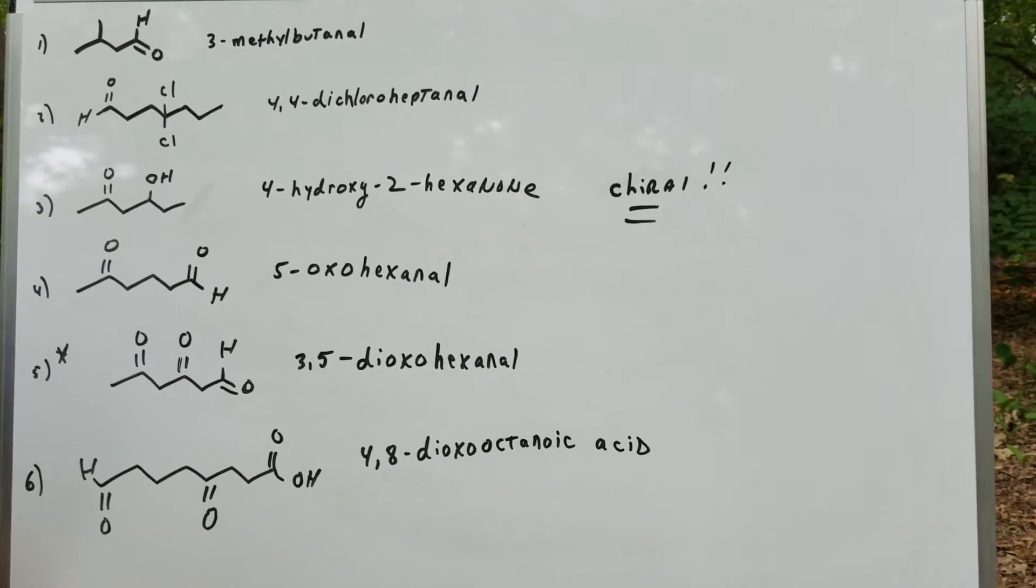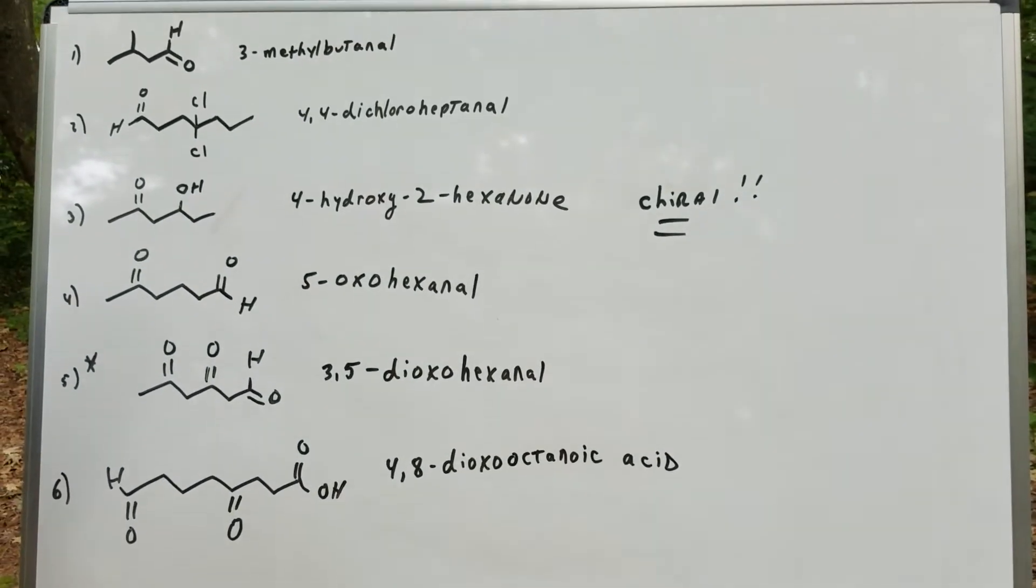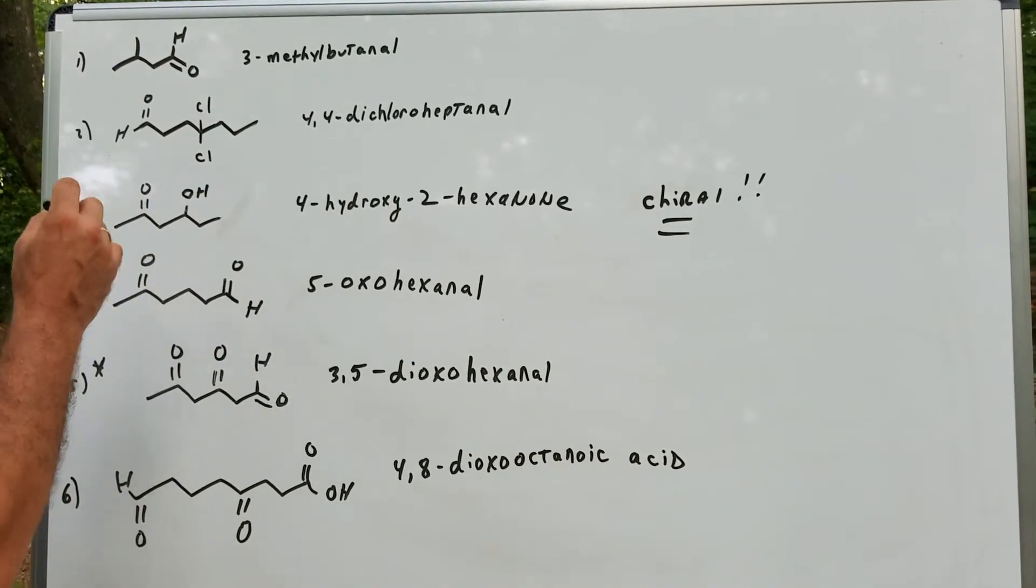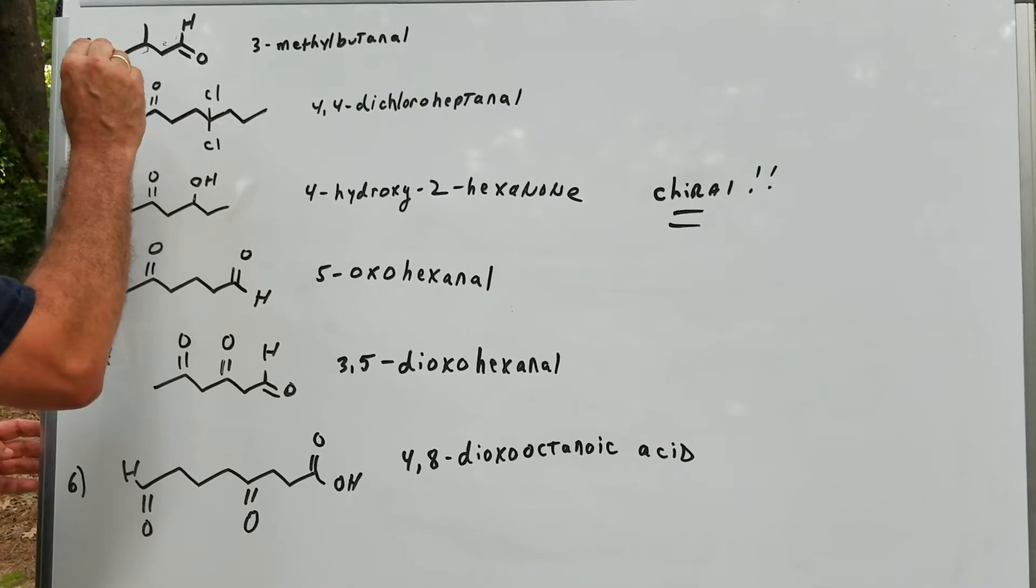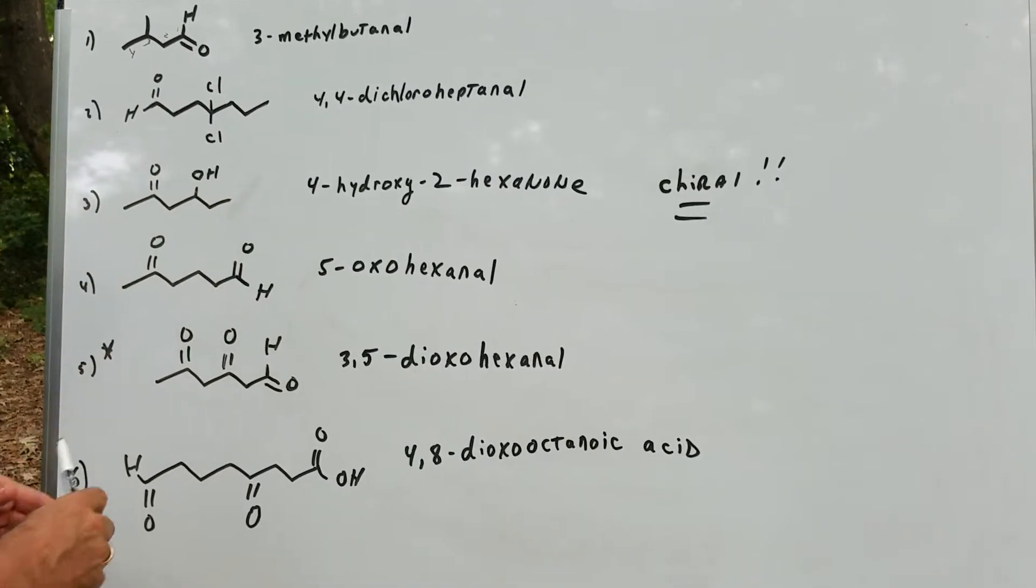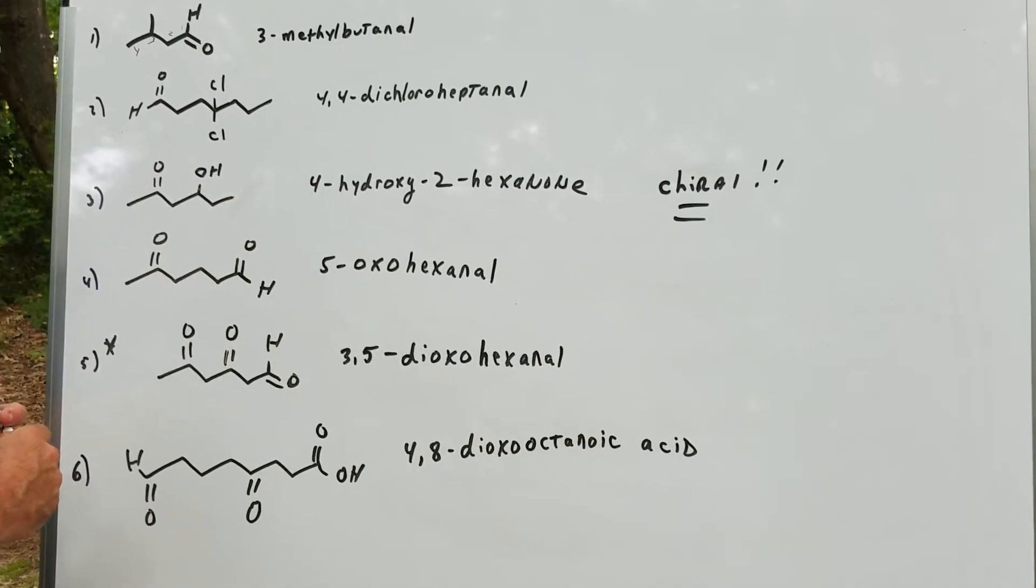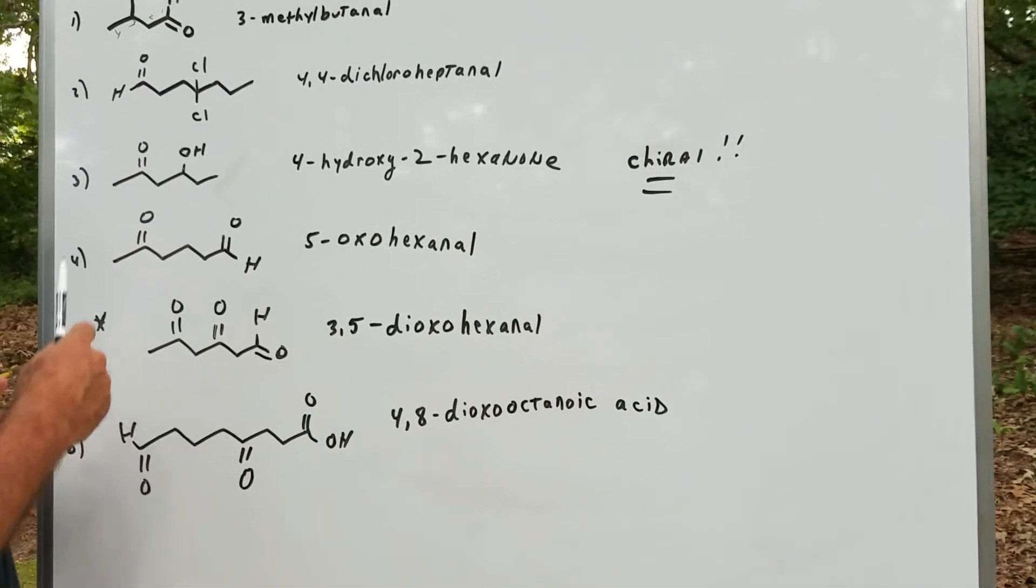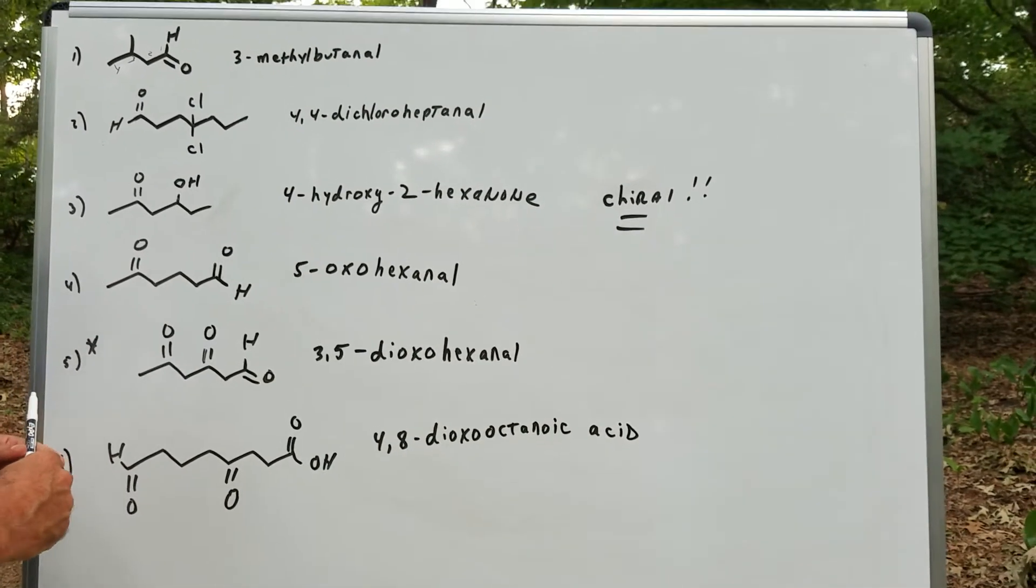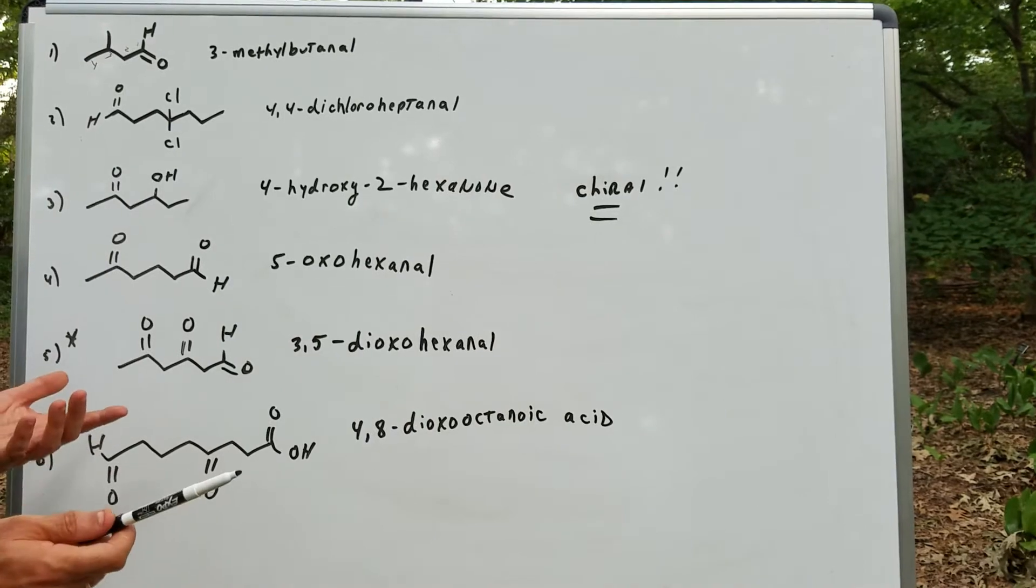I'm going to show you how to name some aldehydes and ketones. First of all, aldehydes end in the word 'al.' On this first one, you would number the longest chain. As you can see there's four carbons, so it's butanal. You can see off of number three there's a methyl group. Putting it together we would get 3-methylbutanal.